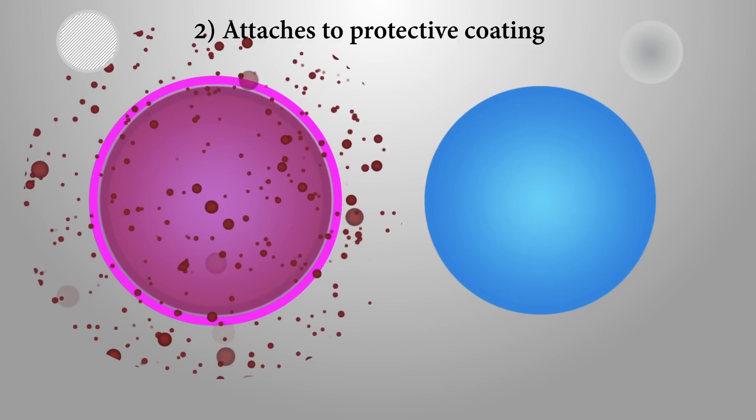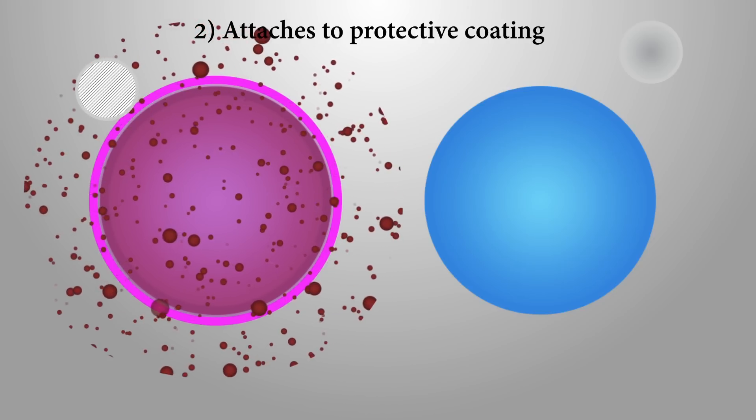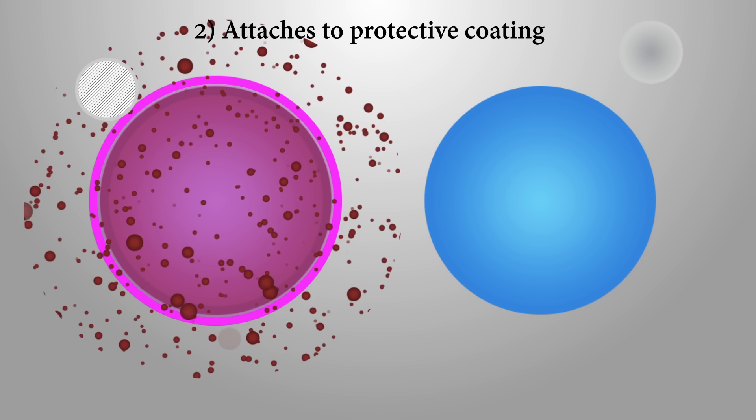Second, once turned on, saposin C attaches to the protective coating. It cannot attach to normal cells since they do not have the protective coating.